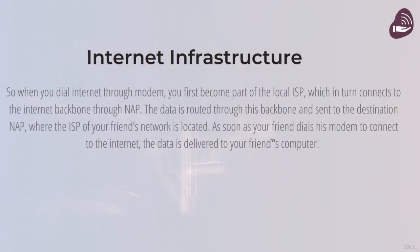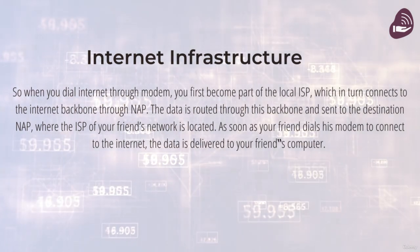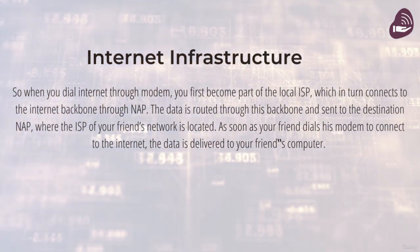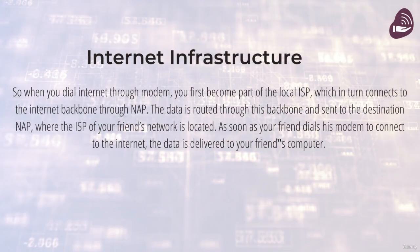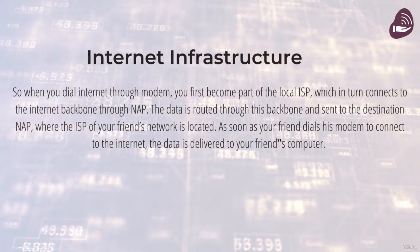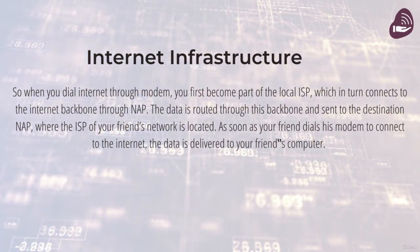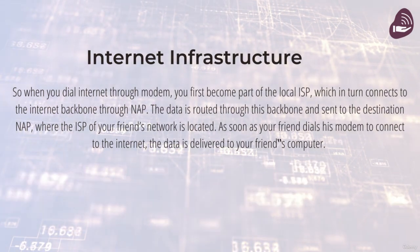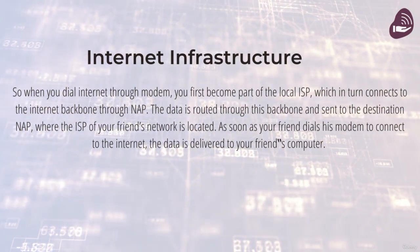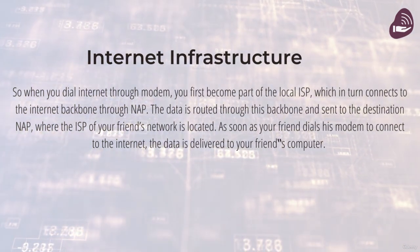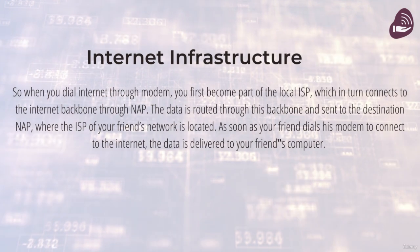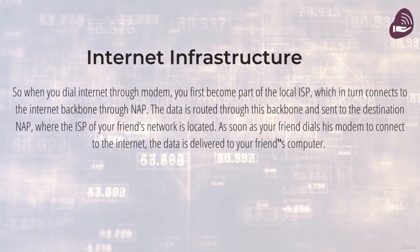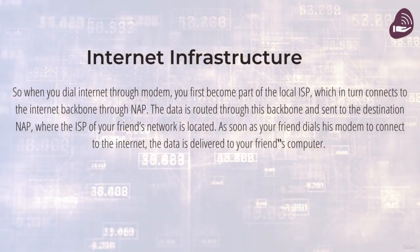So when you dial the Internet through your modem, or connect directly through it, you first become part of the local ISP, which in turn connects to the Internet backbone through NAP. The data is routed through this backbone and sent to the destination NAP where the ISP of your friend's network is located. As soon as your friend dials up his modem or connects directly to the Internet through it, the data is delivered to your friend's computer.